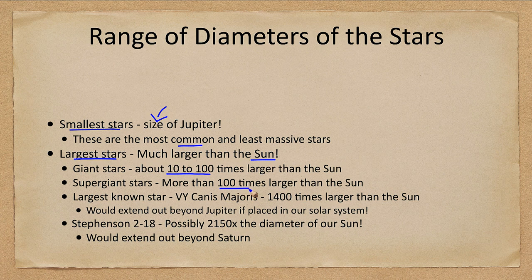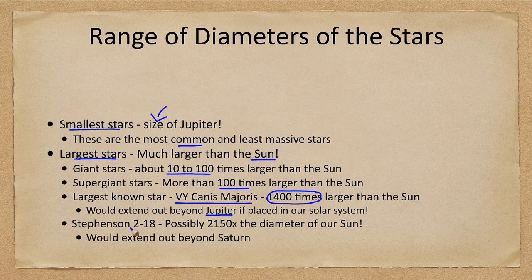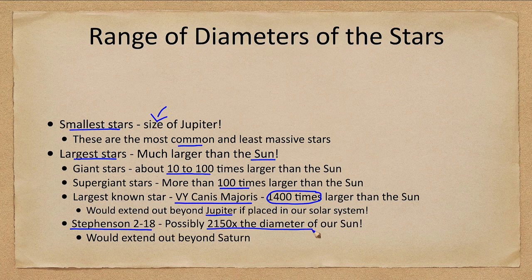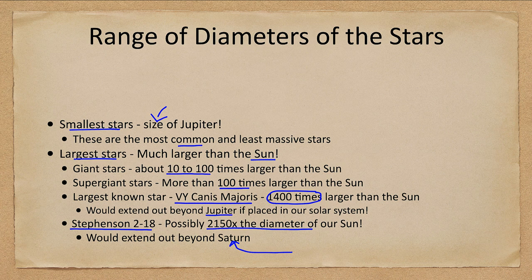Supergiant stars are 100 times larger and the largest known star, VY Canis Majoris, is 1,400 times larger than our sun, which would extend out beyond Jupiter if we placed it where the sun was in our solar system. Another star known as Stevenson 2-18 is possibly over 2,000 times the diameter of our sun and would extend out beyond Saturn in our solar system. So while there's a big range in mass, there is an even bigger range in sizes and luminosities within the different types of stars.